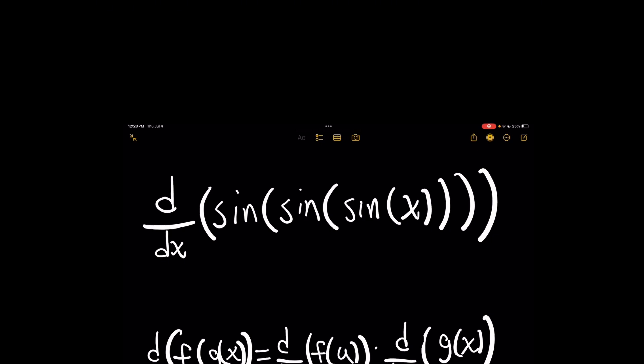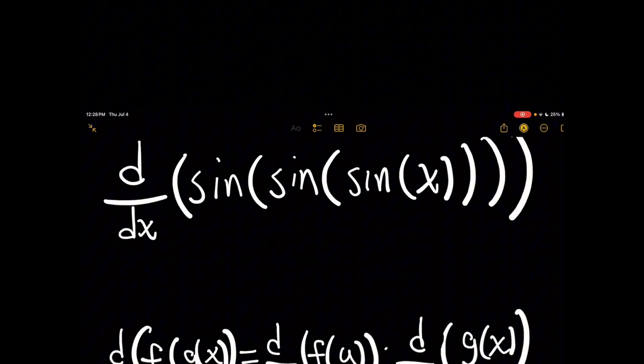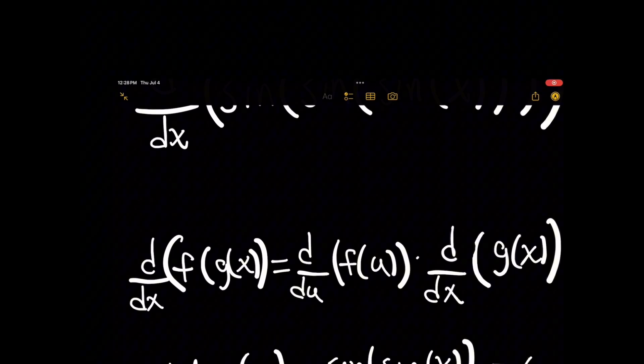When you have this problem, the sine of the sine of the sine of x, you've got a crazy number of function compositions happening here. So if you remember with composition of functions, when you want to take its derivative, you normally would use the chain rule.